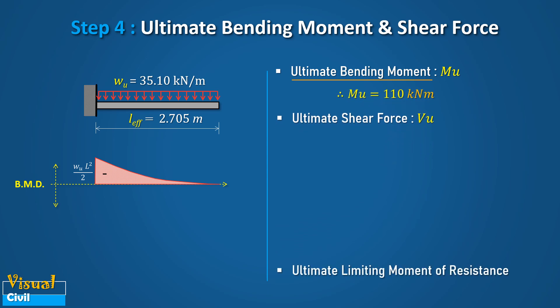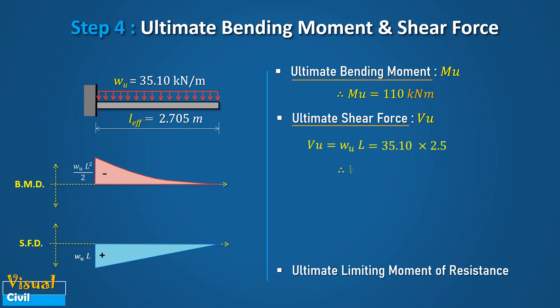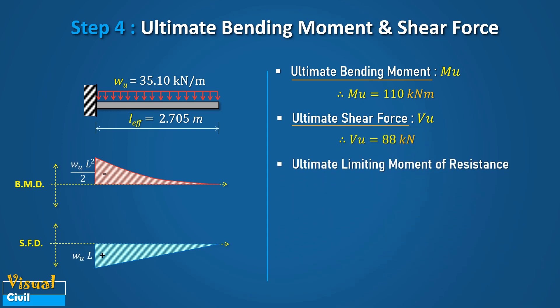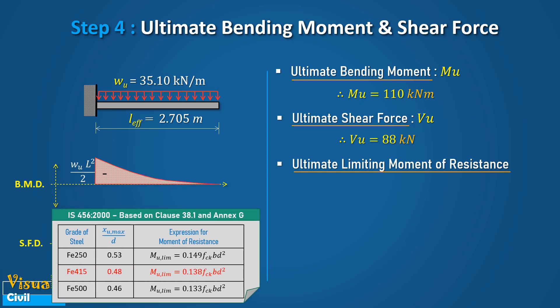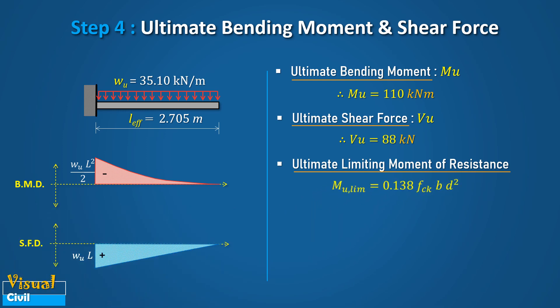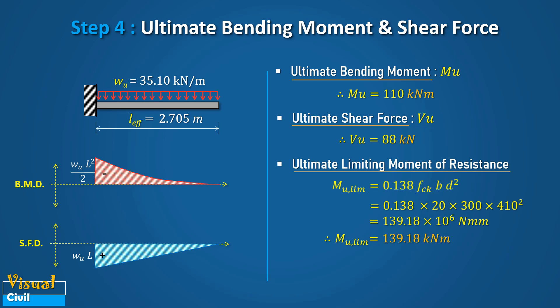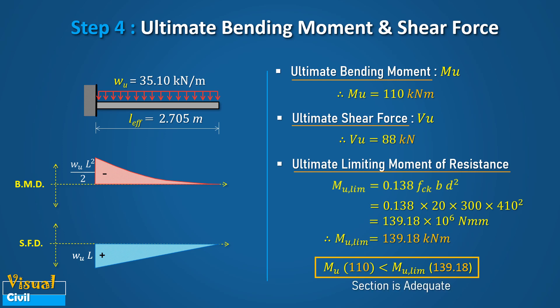Next, compute the ultimate shear force which is equal to W times L. We get VU, the ultimate shear force, equal to 88 kN. To check the adequacy of the assumed cross-sectional size, compute the ultimate limiting moment of resistance. Based on clause 38.1 and Annexure G of IS 456 for Fe415 grade steel, the moment of resistance equals 0.138 × FCK × B × D squared, giving 139.18 kN·m, which is more than the acting bending moment of 110 kN·m. Hence, the initially assumed sectional dimensions are adequate and safe, and the section is under-reinforced.